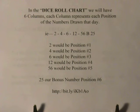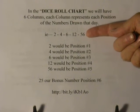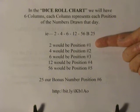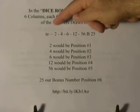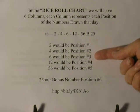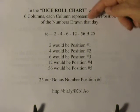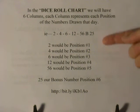In the dice roll chart we will have six columns, and each column represents each position of the number drawn that day. For example, with a draw of 2, 4, 6, 12, 56, and bonus ball 25: two would be position one, four would be position two, six would be position three, twelve would be position four, fifty-six would be position five, and twenty-five, our bonus number, will be in position six.